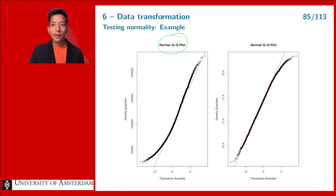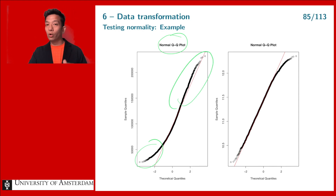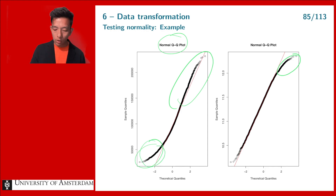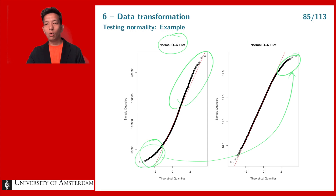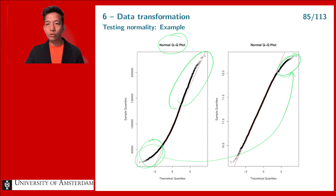Looking at the QQ plot of the original data, it is definitely not normally distributed — it's far from a linear trend, with large deviations. After applying the log transformation, it's still not perfect and there is still a problem on one end; compared to the original, the deviation shifts sides. However, the rest of the data seems to follow the linear pattern more closely, so we're getting closer to a normal distribution after the log transformation than without any transformation.